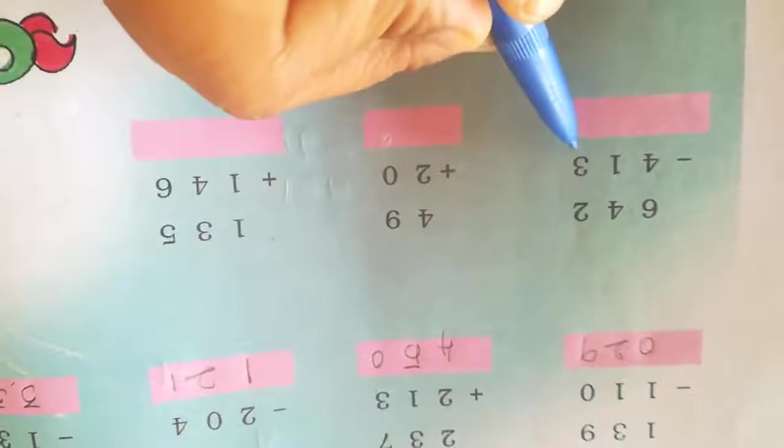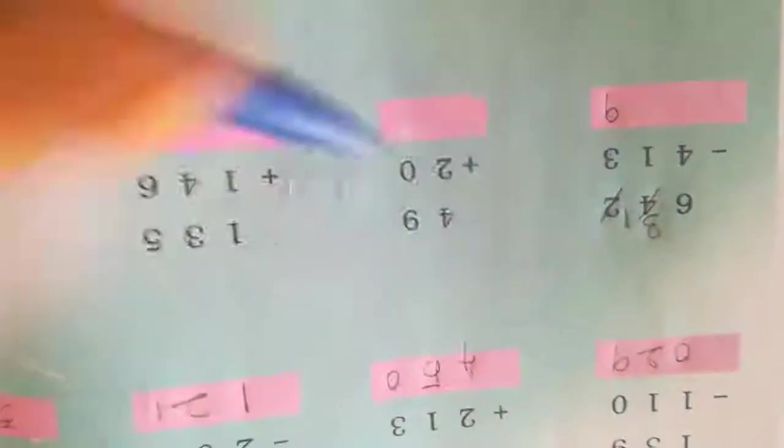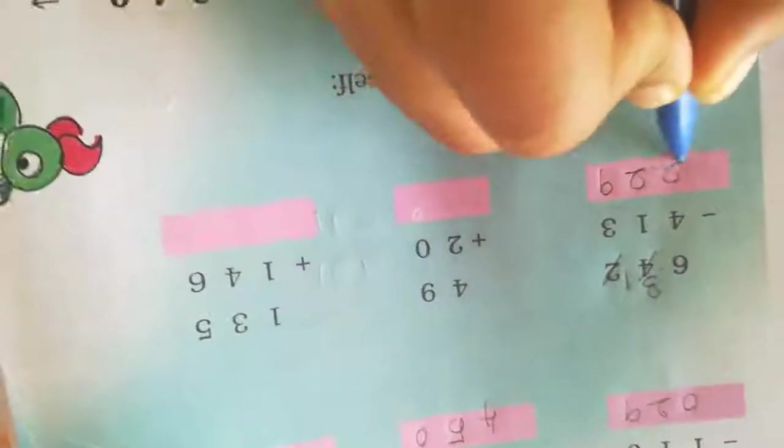Next, 2 minus 3 is not possible, so we want to borrow. Here it will become 12. So 12 minus 3 — keep 12 in your mind, count after 3: 4, 5, 6, 7, 8, 9, 10, 11, 12. How many fingers? 9. Then 3 minus 1 is 2, and 6 minus 4 is 2.